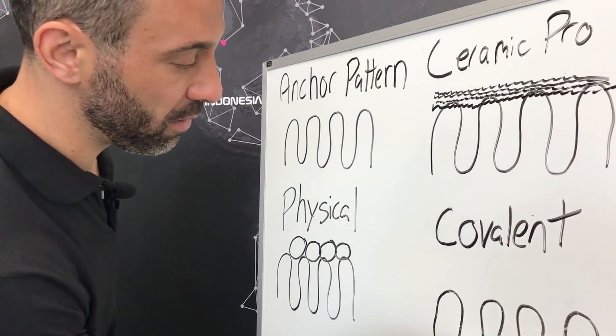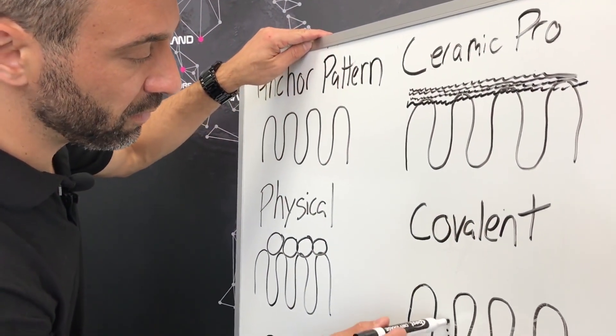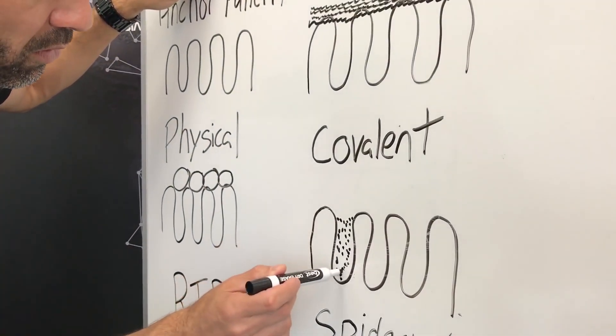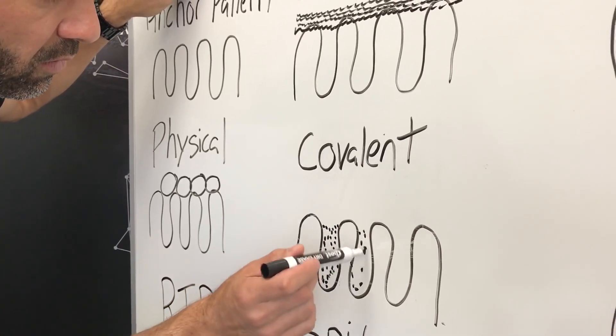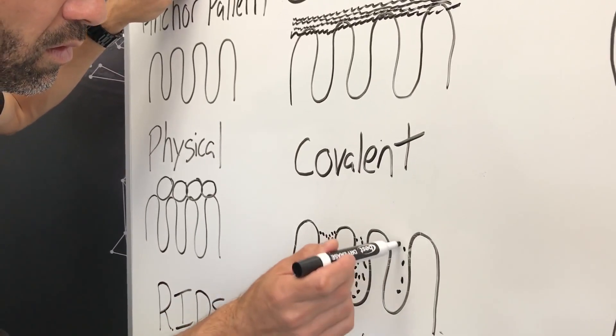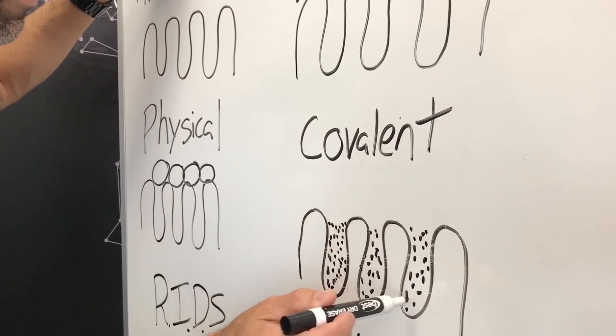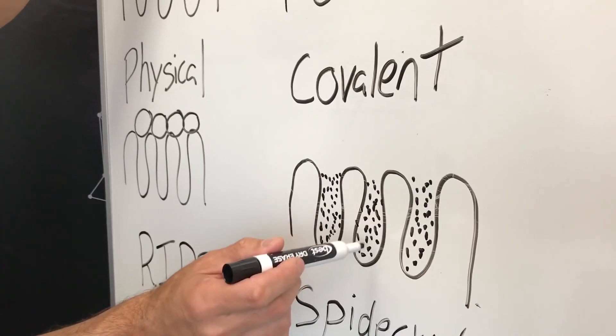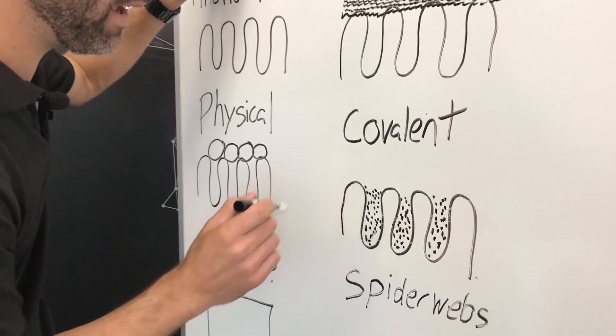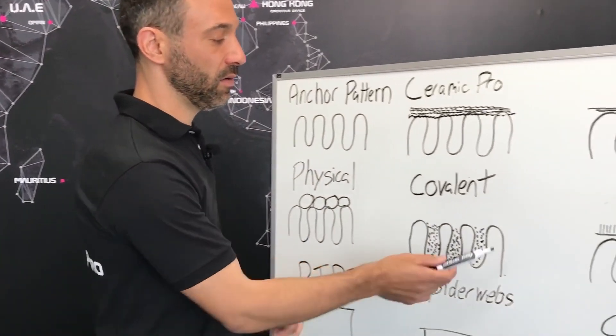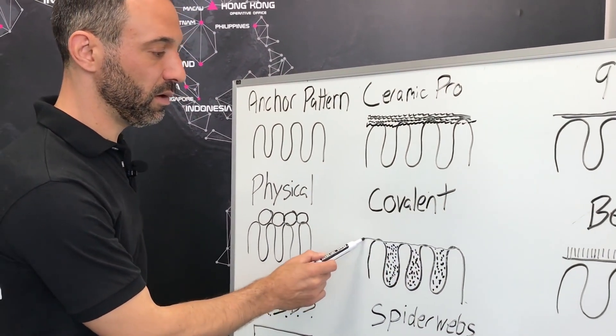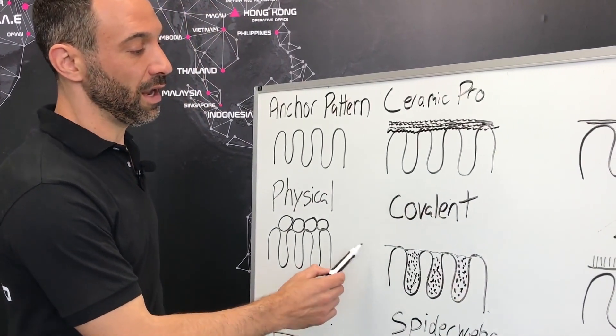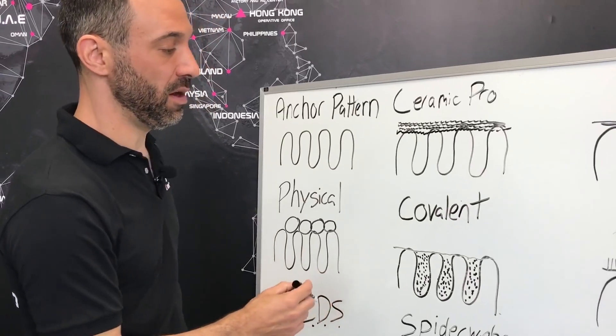Now Ceramic Pro works in a different way by forming a covalent bond and permanently filling the pores using very, very, very small particles, and this effect cannot be washed off. Detergents won't remove it, heat will not evaporate it as waxes and sealants had in the past. And this, once it's filled, is permanent, which is why we call it a permanent bond. So it cannot be removed by anything other than abrasion.